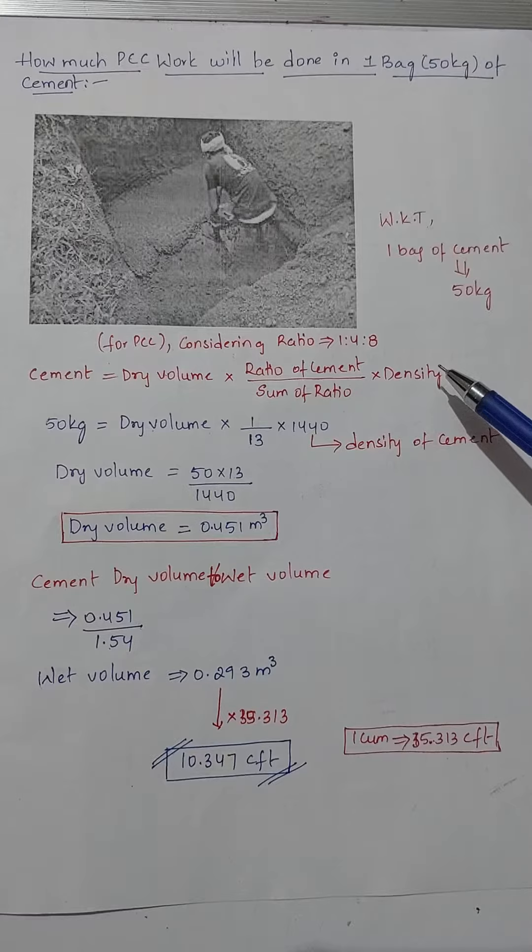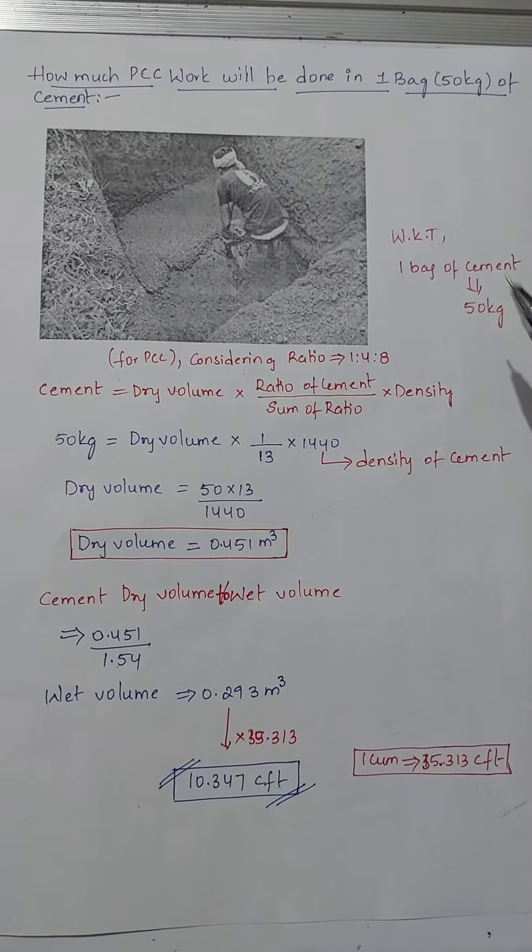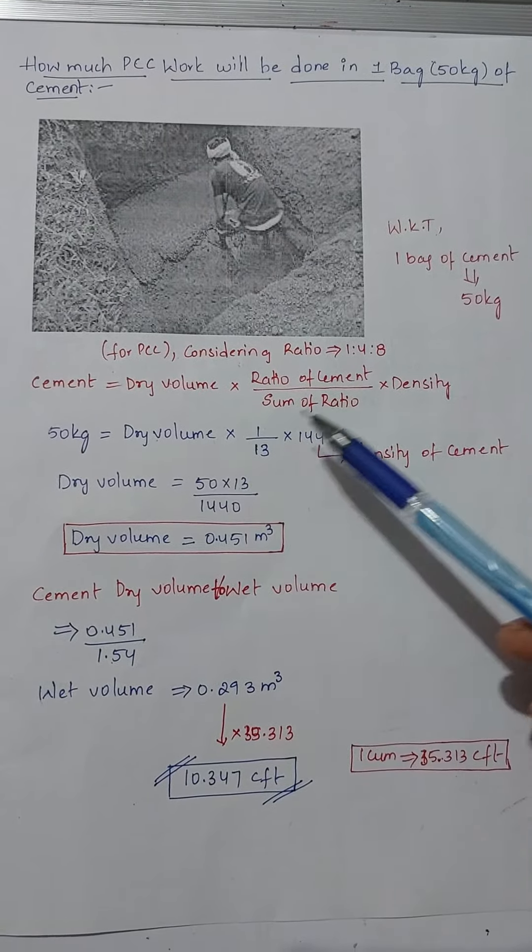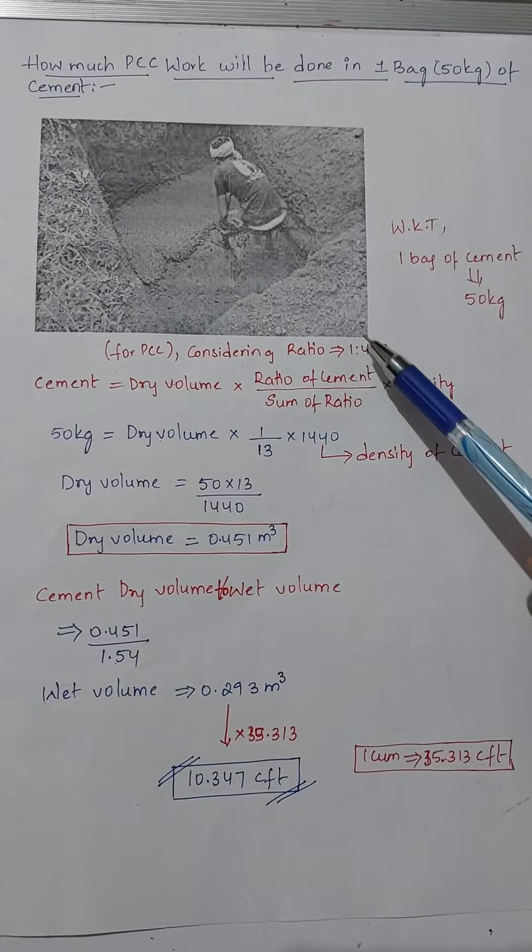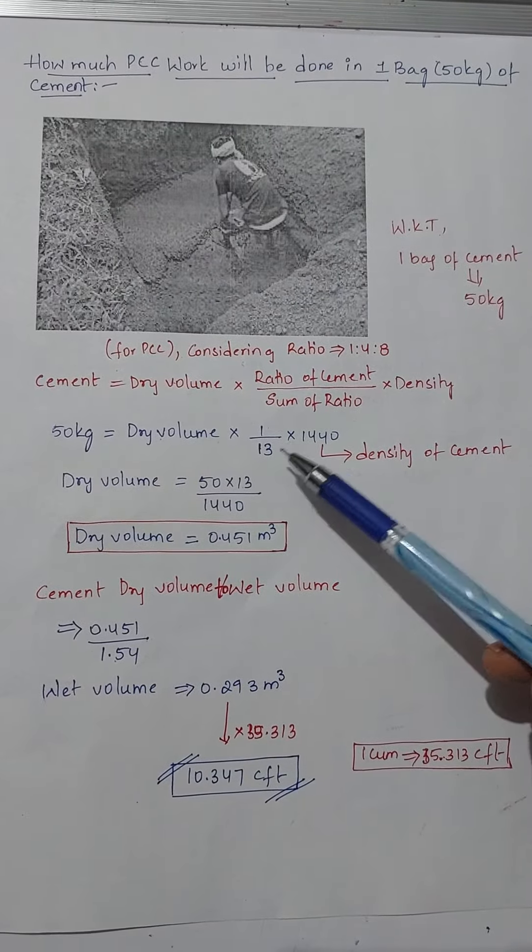We will do it to dry volume, so here cement can be one bag. We are taking 50 kilograms, so 50 kilograms equals to dry volume into ratio of cement is 1, so the sum of ratio is 1 plus 4 plus 8 which is 13, and density of cement is 1440 kilograms per meter cube.